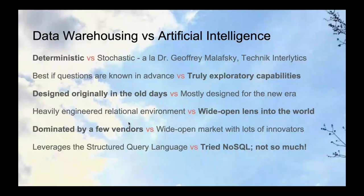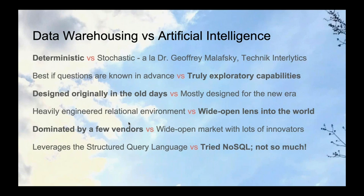I recently gave a presentation about data warehousing versus artificial intelligence. Data warehousing is really deterministic — if you want to know exactly how many widgets were sold, you're looking to data warehousing for that exact number. My colleague Dr. Jeffrey Miloski, data scientist for the Bloor Group, made the determination that deterministic is data warehousing, and stochastic is really for exploratory purposes — that's where AI is very useful.